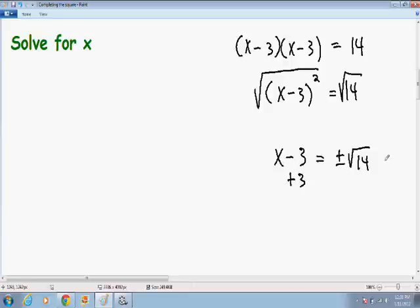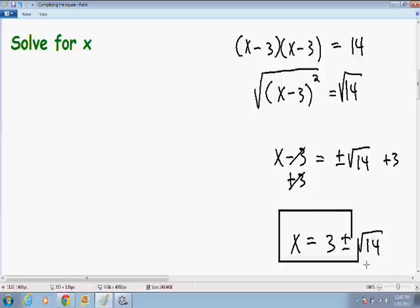is we just need to add 3 to both sides. And the 3's cancel out. And finally we're left with x is equal to 3 plus or minus the square root of 14. And this is our final answer.